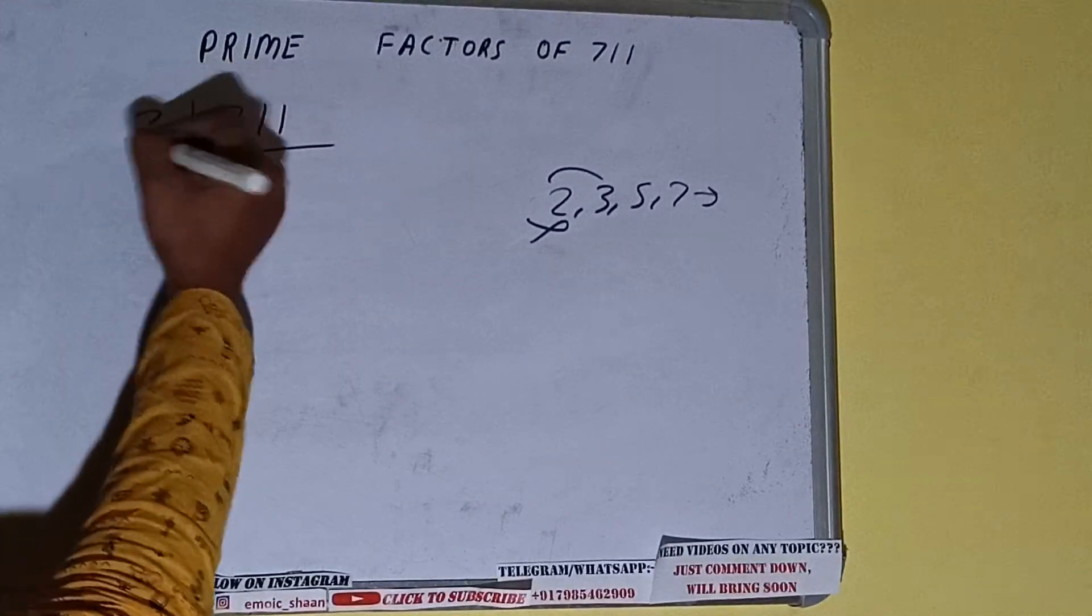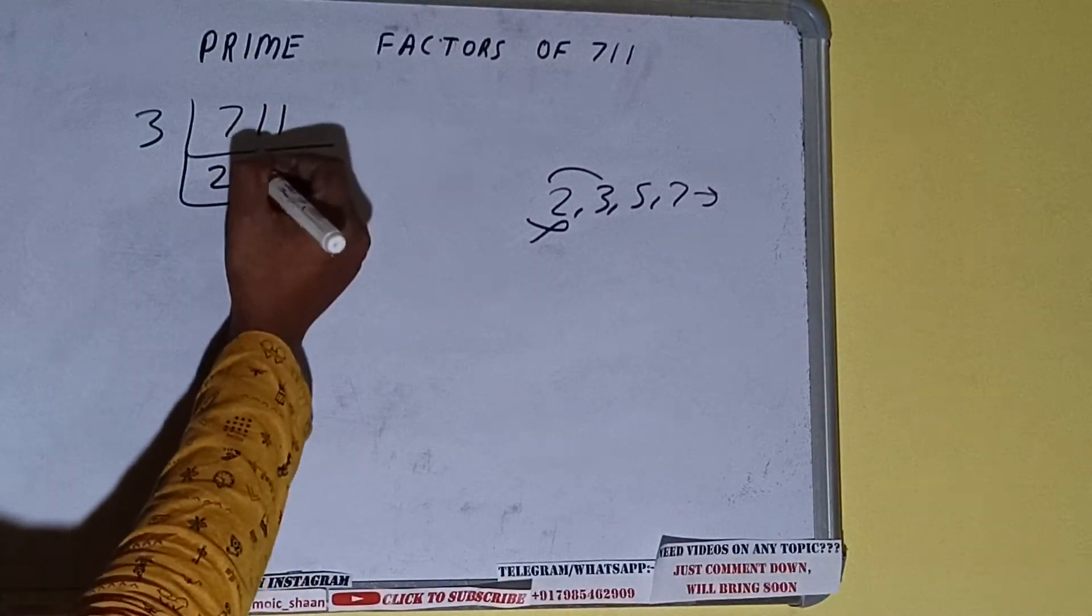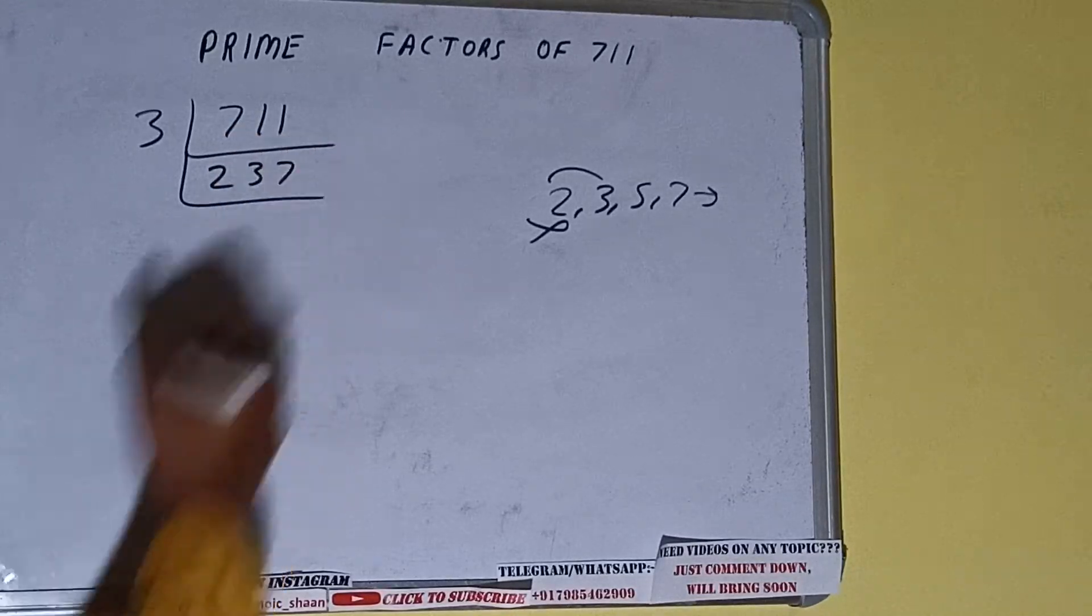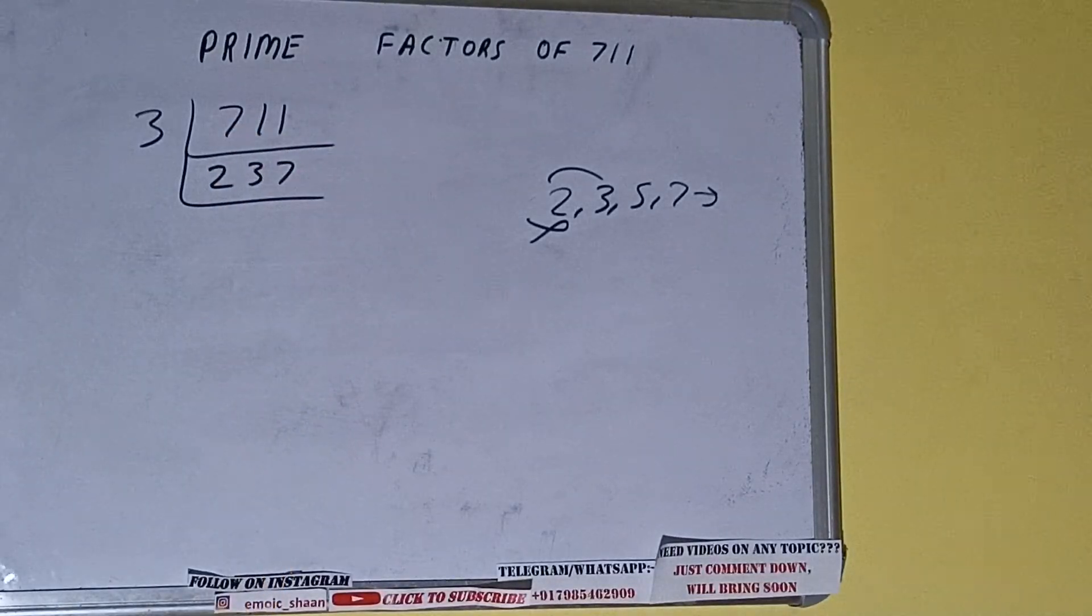So divide it and we'll be having 237. Is 237 divisible by 3? Let's check.